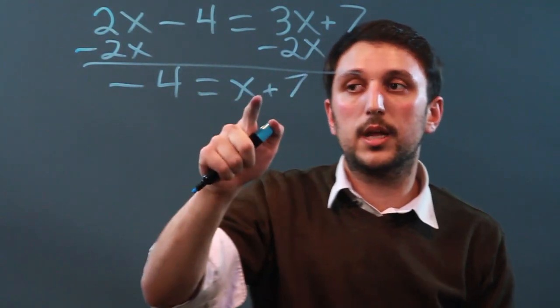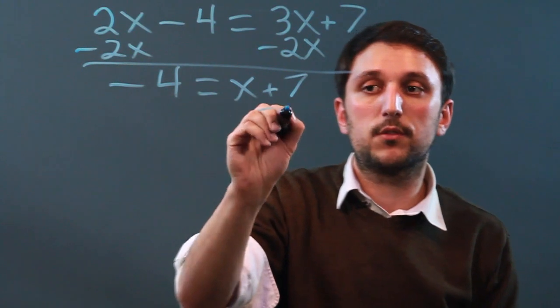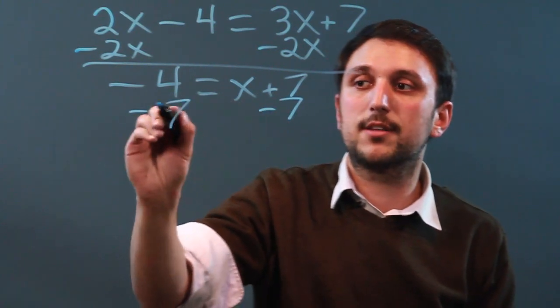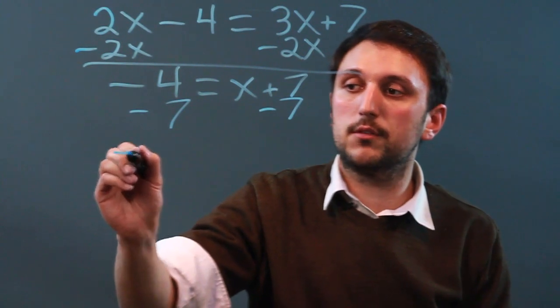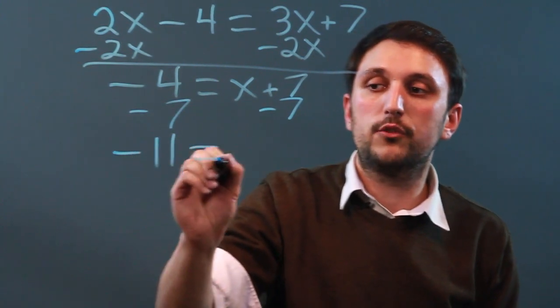Next we're going to want to bring the number over. So here we have to subtract 7 and subtract 7. So negative 4 minus positive 7 is negative 11, which equals x.